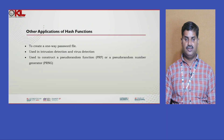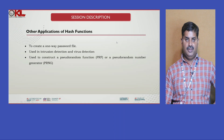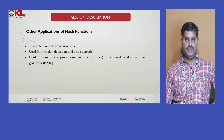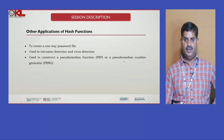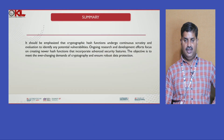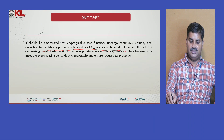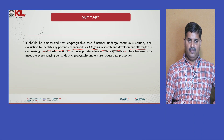Other applications of hash functions include creating a one-way password file. This is a practical application where real-time users can use it — in Gmail or other social media — because it creates a one-way hash password file. Hash functions are also used in intrusion detection and anomaly detection methodologies, and they are used to construct a pseudo-random function (PRF) or pseudo-random number. It should be emphasized that hash functions used in digital signatures must undergo continuous scrutiny and evaluation to identify potential vulnerabilities, and ongoing research and development efforts will be applied.